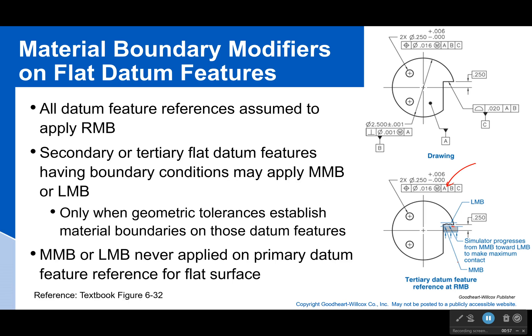So secondary or tertiary flat datum features may apply the maximum material boundary or the least material boundary. However, those are never applied on a primary datum feature for a flat surface — never for a flat surface. There are reasons for that. Mostly it's because if you do that, you have a wobbly beginning and then everything else is uncertain based on how the first part is wobbly.